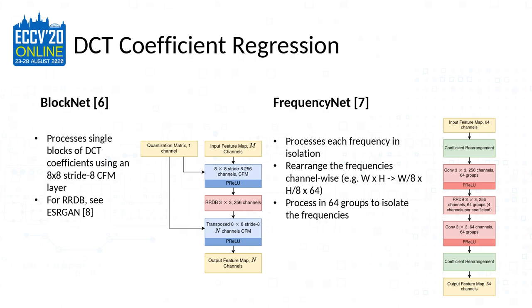For regression on DCT coefficients, there are really two ways to do it, and we use both. There's the block net idea, where you process single blocks of DCT coefficients at a time using an 8x8 stride layer. This produces a representation per block, and once you're at the block level you can use basically whatever network structure you want.